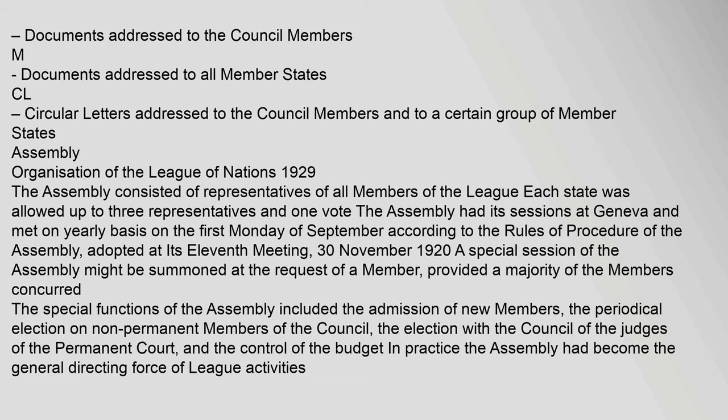The Assembly consisted of representatives of all members of the League. Each state was allowed up to three representatives and one vote. The Assembly had its sessions at Geneva and met on a yearly basis on the first Monday of September. A special session of the Assembly might be summoned at the request of a member, provided a majority of the members concurred. The special functions of the Assembly included the admission of new members, the periodical election of non-permanent members of the Council, the election with the Council of the judges of the Permanent Court, and the control of the budget.